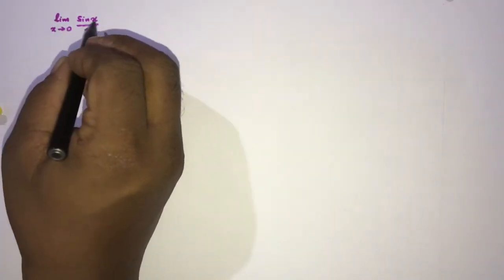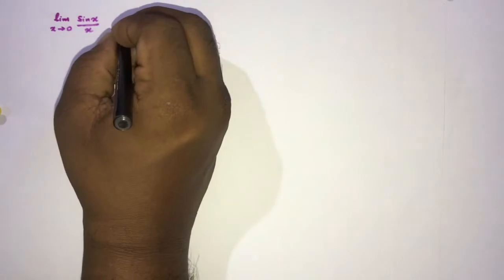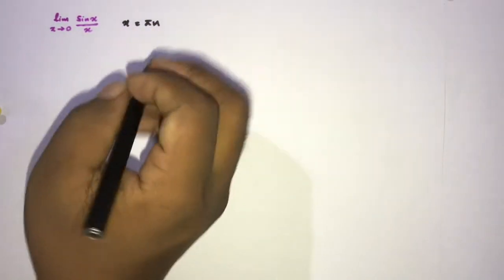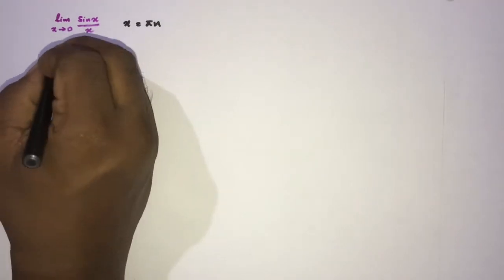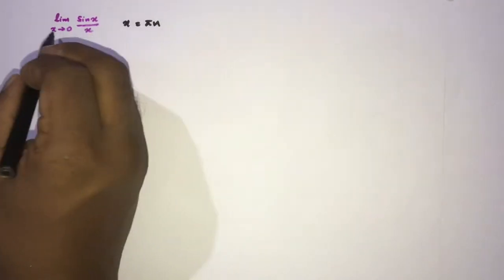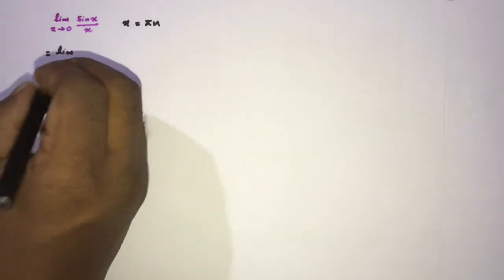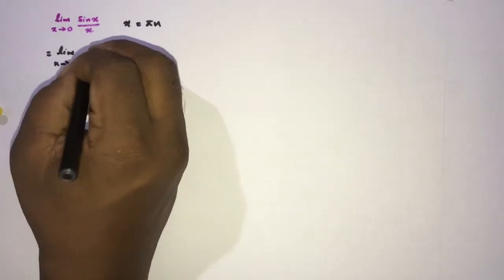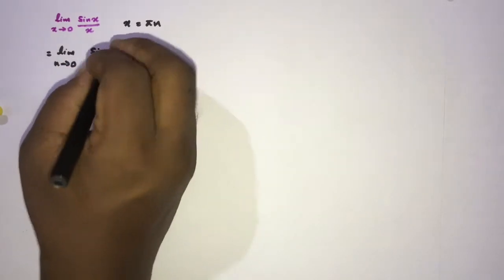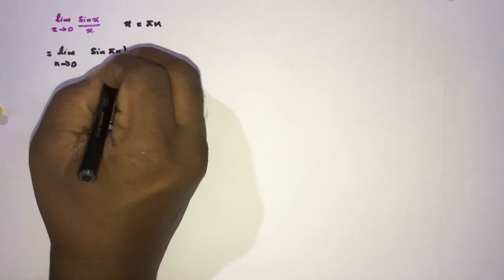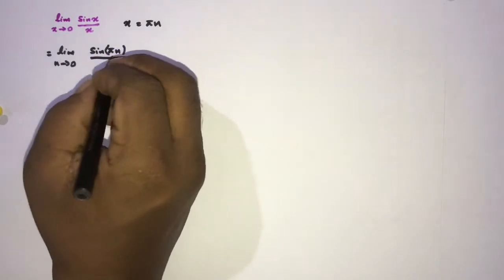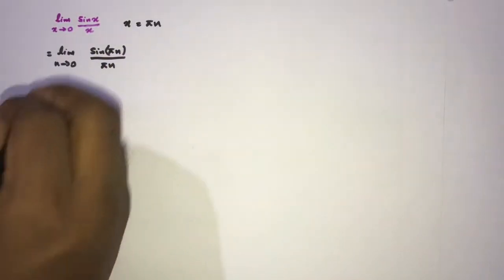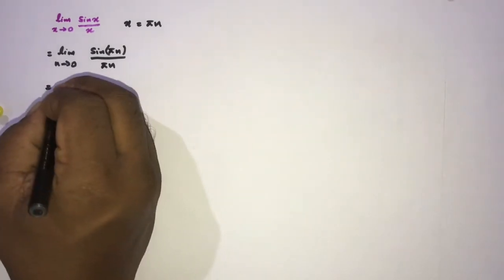Here, limit x approaches 0 of sin(x)/x. I am going to take the substitution x = π·n. Now we can write the limit as x approaches 0, so n also approaches 0. So as n approaches 0, we have sin(π·n) over π·n.